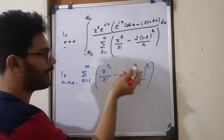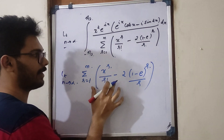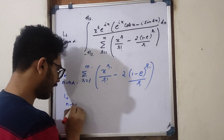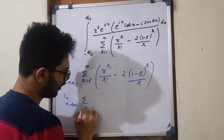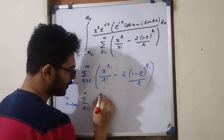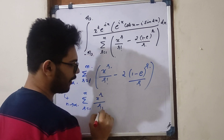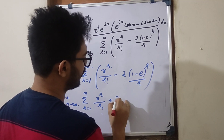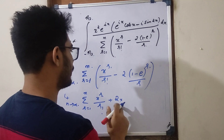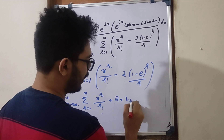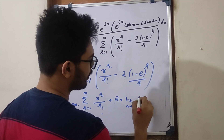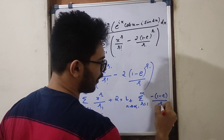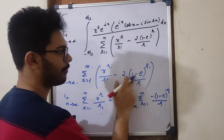This is why sigma is separated into two values. The limit is separated by evaluating: limit is n tends to infinity, sigma r equal to 1 to n, x raised to r divided by r factorial. Plus 2 into limit n tends to infinity, sigma r equal to 1 to n, minus of 1 minus e divided by r, the whole raised to r.